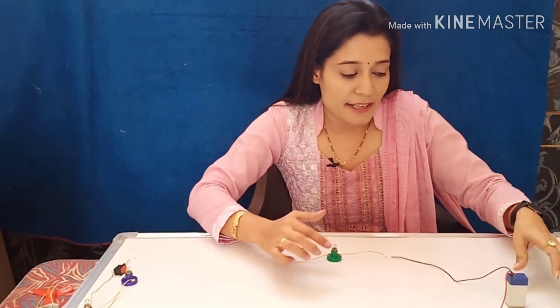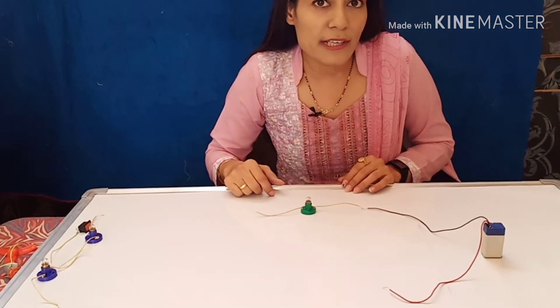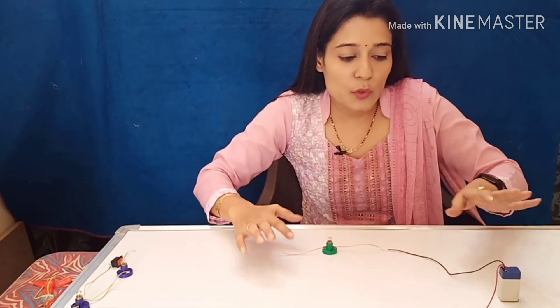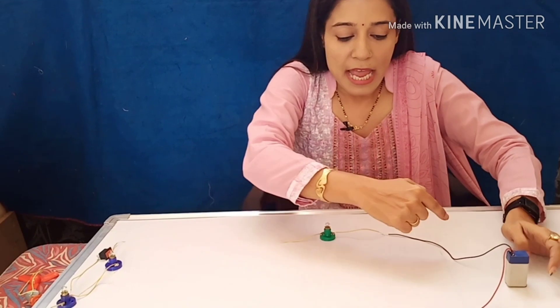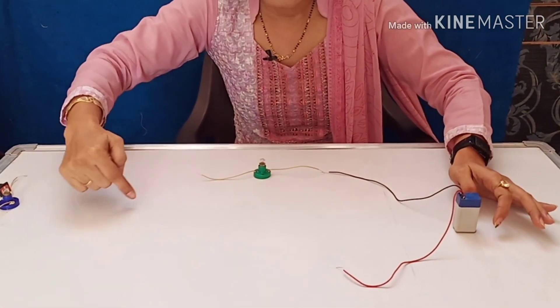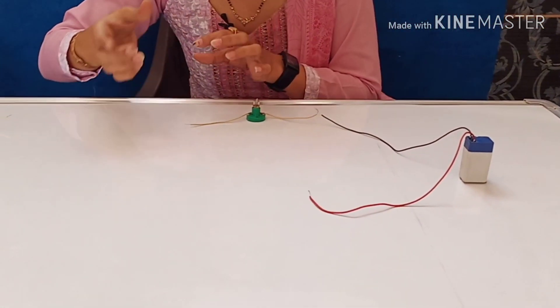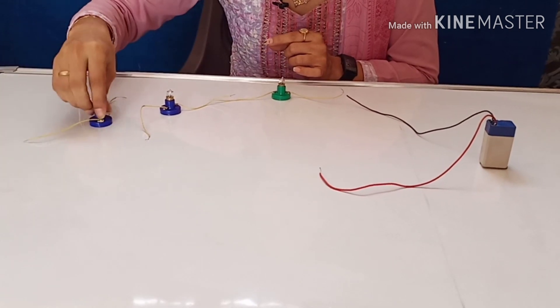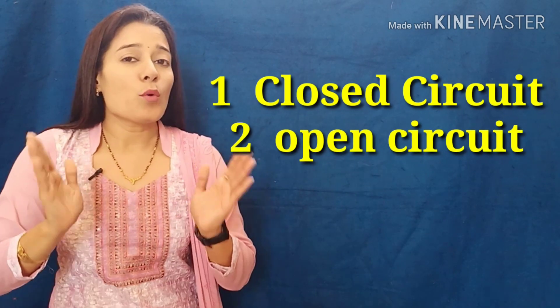Let me show you a circuit in real life to help you understand it. A circuit is a closed path which starts from the positive terminal of the battery and goes back to the negative terminal, making it a closed path. You can also connect other components like bulbs, a fan, a motor, or a key with this circuit. Circuits are of two types: closed circuit and open circuit.